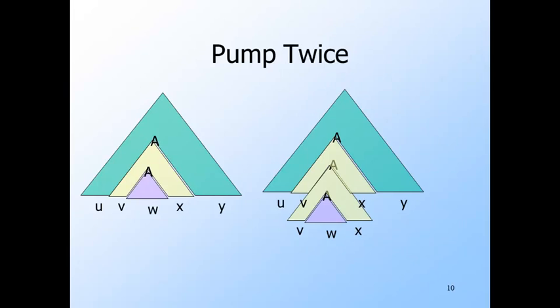Or we could pump twice. That is, replace the purple tree by the yellow, which has the purple within it, and you get a parse tree whose yield is U V V W X X Y.